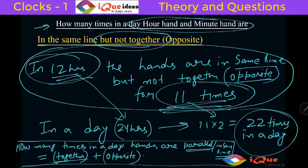Now together in 12 hours it was 11 times, so in a day it will be 22 times. Opposite in 12 hours it was 11 times, so in a day it will be 22 times. So 22 plus 22, that is 44 times.